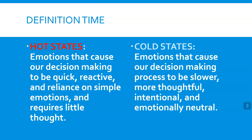A cold state consists of emotions that cause our decision-making to be slower, more thoughtful, more intentional, and emotionally neutral. You can probably figure out by now which emotional state is going to get you into trouble and which emotional state is going to keep you out of trouble.